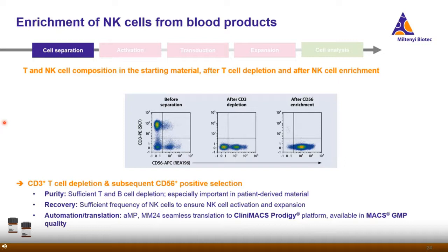Regarding NK cells, you can see whole PBMCs, then CD3-depleted, and finally CD3-depleted and CD56-enriched NK cells. It is important to ensure efficient CD3 depletion, especially when thinking about translation into the clinical setting, and also a sufficient enrichment of NK cells, as only approximately 10% of PBMCs are NK cells.